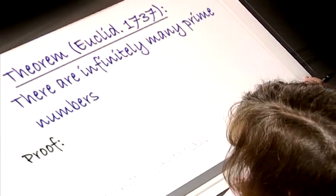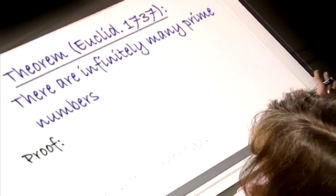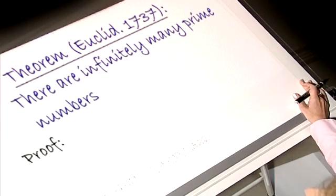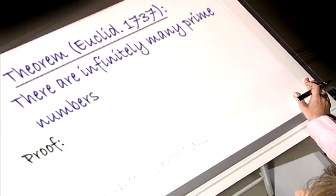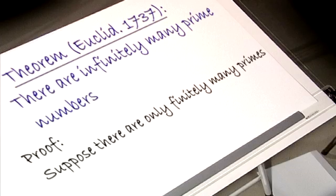The theorem we want to show goes back to Euclid and was first proved in 300 BC — antique, one might say. The theorem states: there are infinitely many prime numbers. We show this by proof by contradiction. Suppose there are only finitely many, and let's call them p1, p2, up to pn.